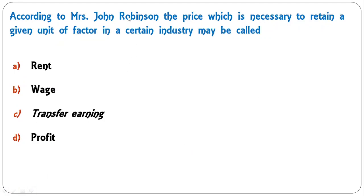According to Mrs. Joan Robinson, the price which is necessary to retain a given unit of a factor in a certain industry may be called — rent, wage, transfer earning, or profit? It is called transfer earning, as defined by Mrs. Joan Robinson.